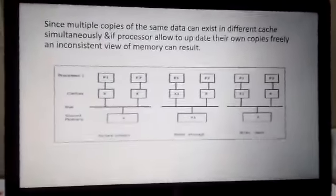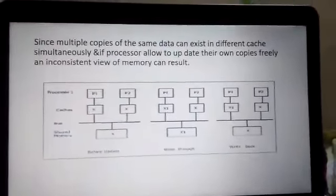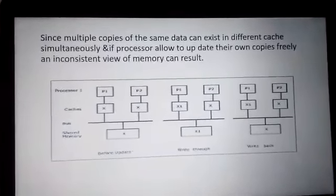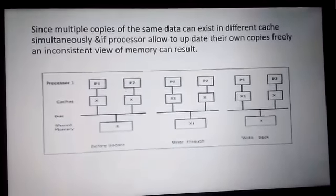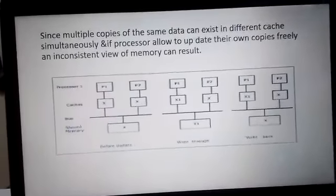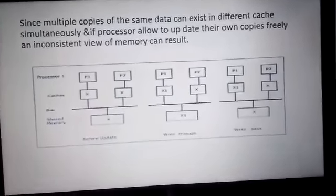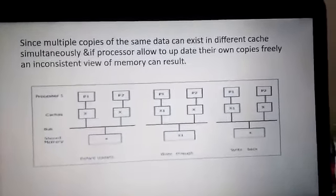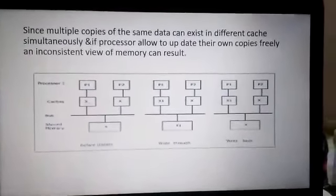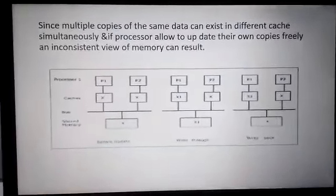Cache coherence hone ki teen cases hain jinke through cache coherence problem hoti hai: first hai inconsistency due to data sharing, second case is inconsistency due to process migration, and third is inconsistency due to input/output operation.